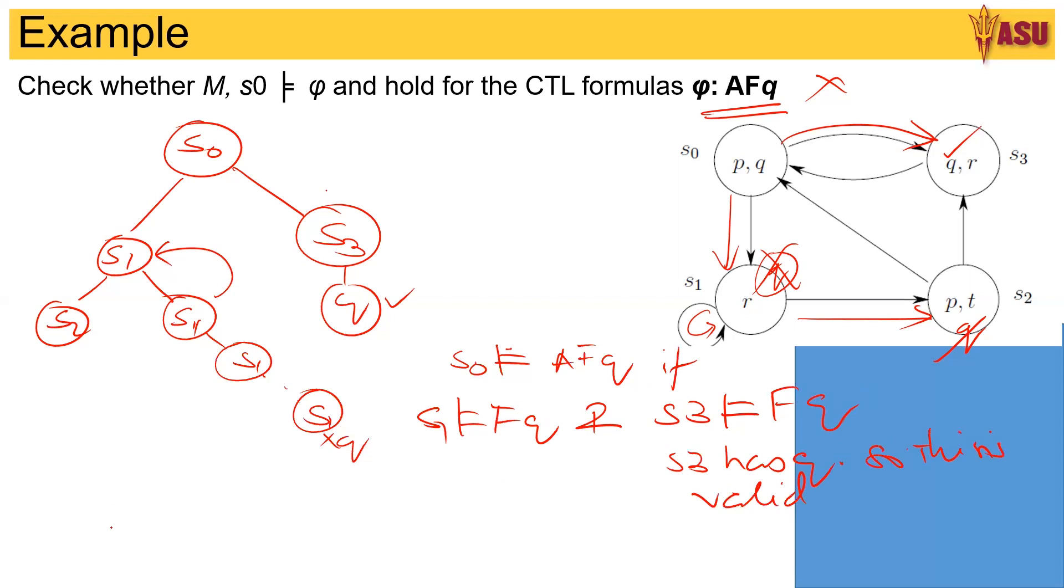Now why this is, because it says A, all paths. That means it has to be true for all the paths. We can't take one single path that holds and say it holds. So it does not have a q.